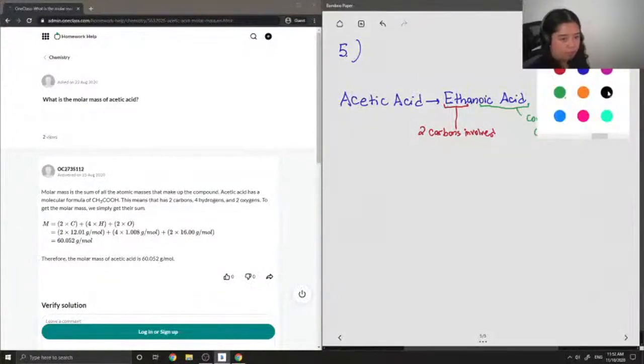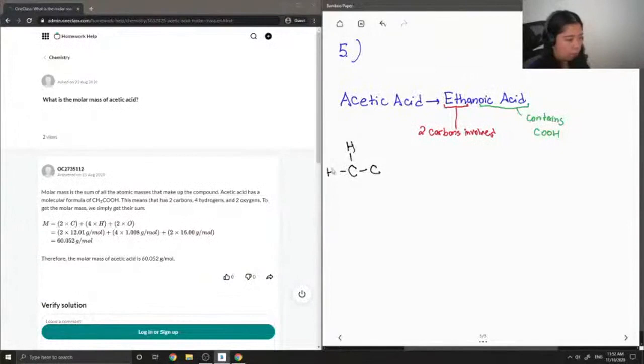Now I'm going to draw out this structure. I'll draw out my two carbons. This carbon at the end will have three hydrogens, and the carbon on this side will have carboxylic acid. That means it has a double bonded oxygen and also an alcohol group. And this is the structure.